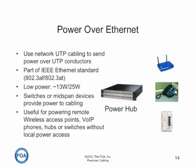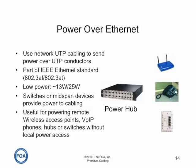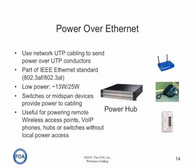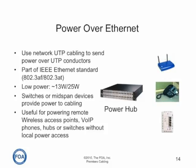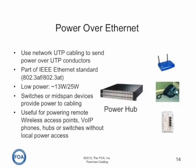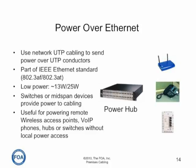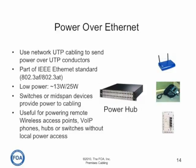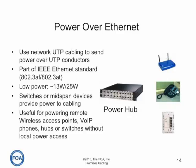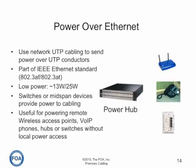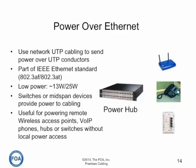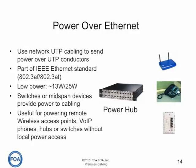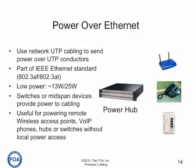One thing copper cabling can do that fiber cannot do is provide both power and signal transmission. Power over Ethernet is part of the IEEE Ethernet standard, not cabling standards, and provides for two different power levels — 13 watts and 25 watts of power — through powered switches or mid-span devices that provide power to the cabling. It's useful for powering remote wireless access points, voice over IP phones, hubs or switches, without local power access. But all of these devices must meet the maximum power output of Power over Ethernet, which is currently 25 watts, which means many devices will not work on Power over Ethernet and require local AC power.